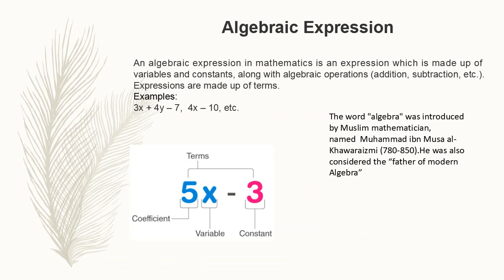He also considered the father of modern algebra. Here we can see 5x minus 3. The 5 is the coefficient, x is the variable and 3 is the constant. These are the terms, both 5x and minus 3 are the terms.